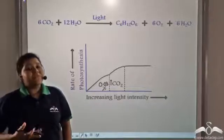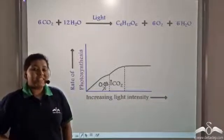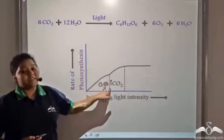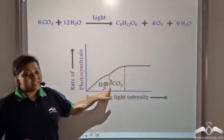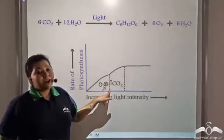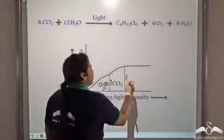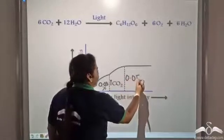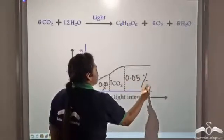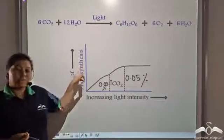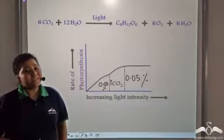So, even if you give more light intensity to the plant, this becomes a limiting factor. But if you increase the amount of light intensity, increase the percentage of carbon dioxide from 0.03 percent to 0.05 percent and along with it increase the light intensity, the rate of photosynthesis will also increase.